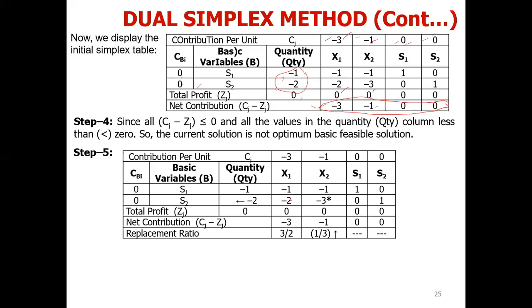Now, to decide the entering variable, we make the ratios. Instead of quantity divided by the corresponding pivot column element as in the regular simplex, here we divide the corresponding CJ minus ZJ value by the pivot row element. As noted, if there is a zero or positive number in the pivot row, those ratios are not taken.